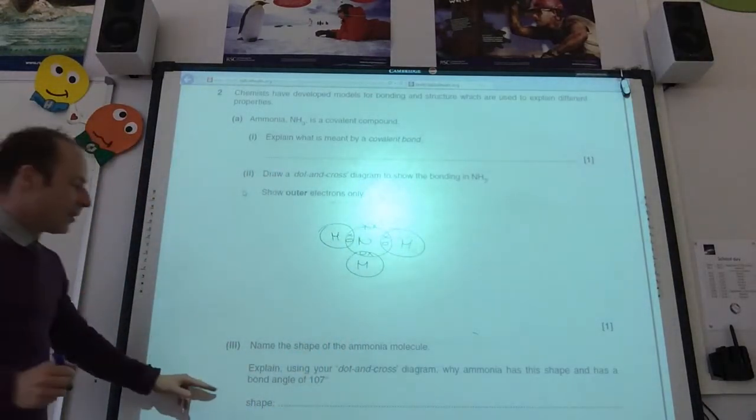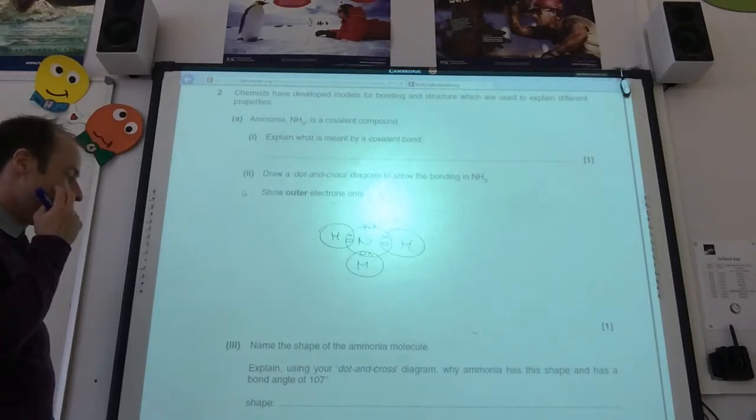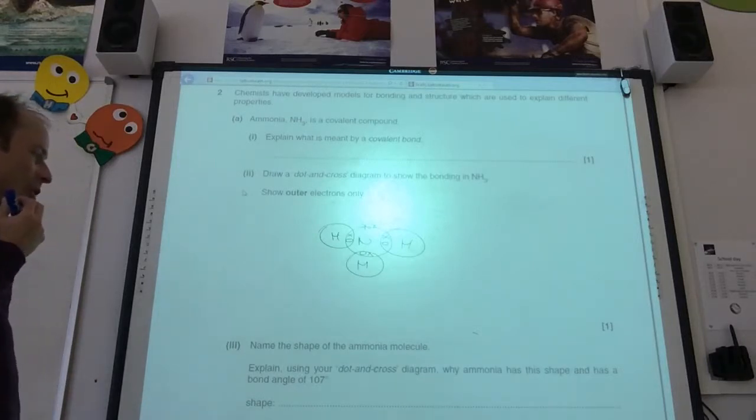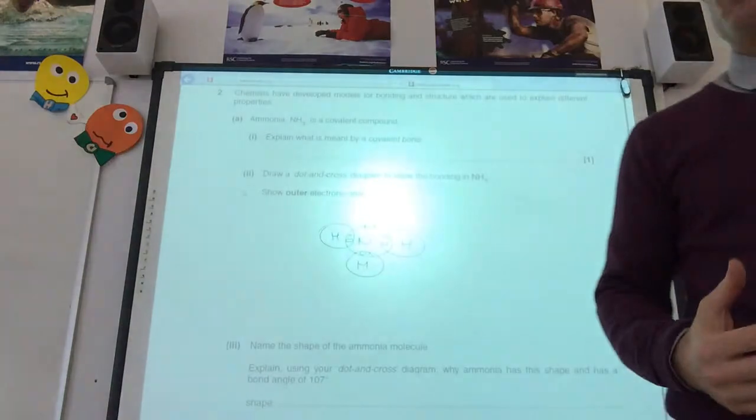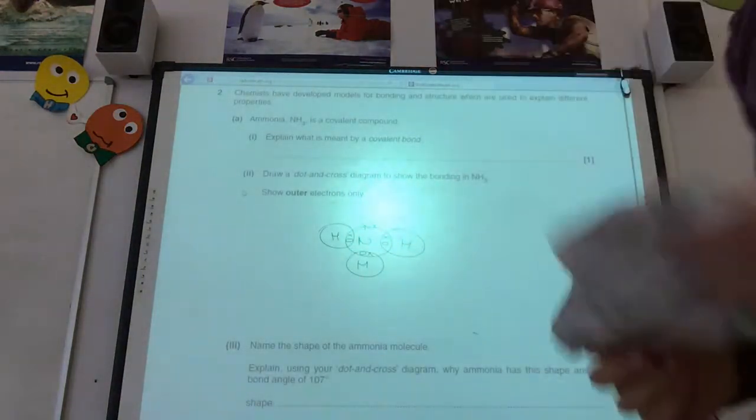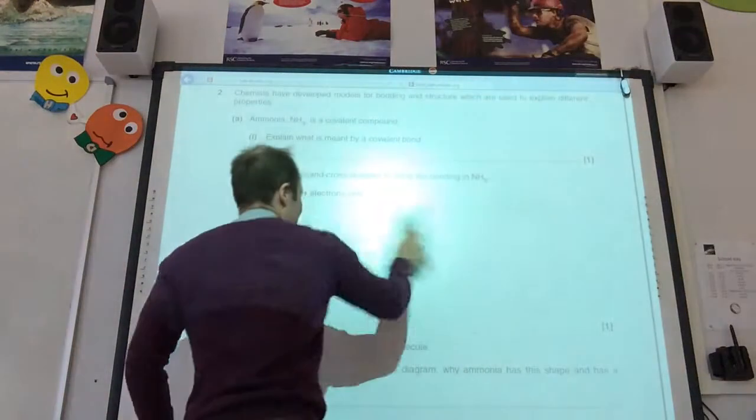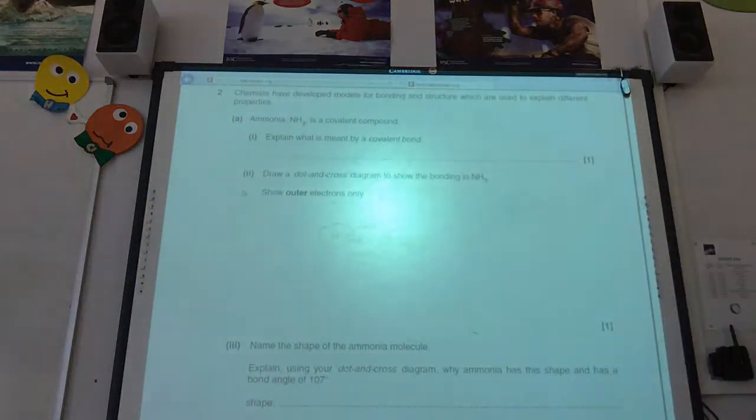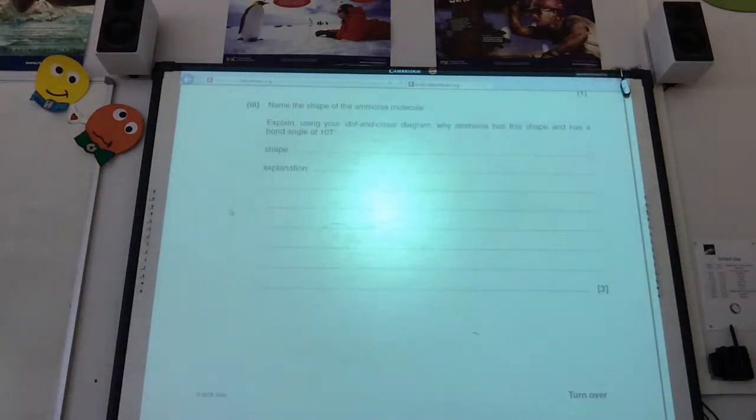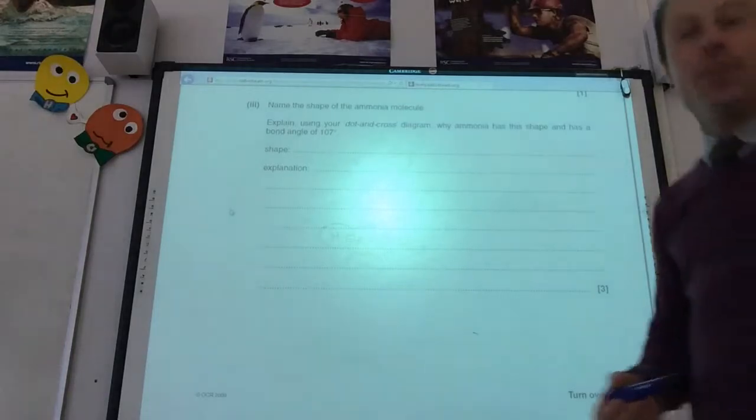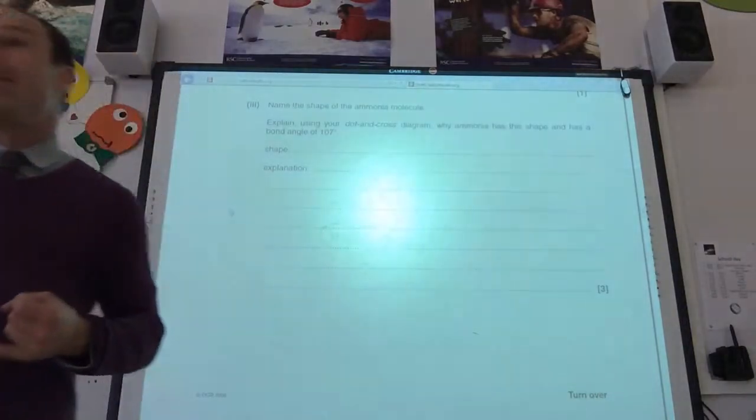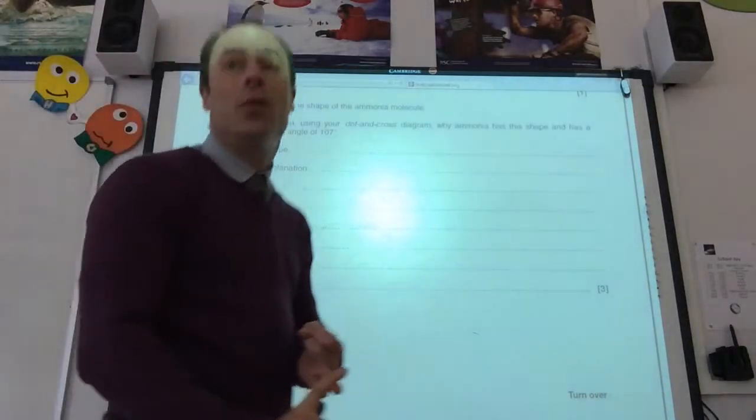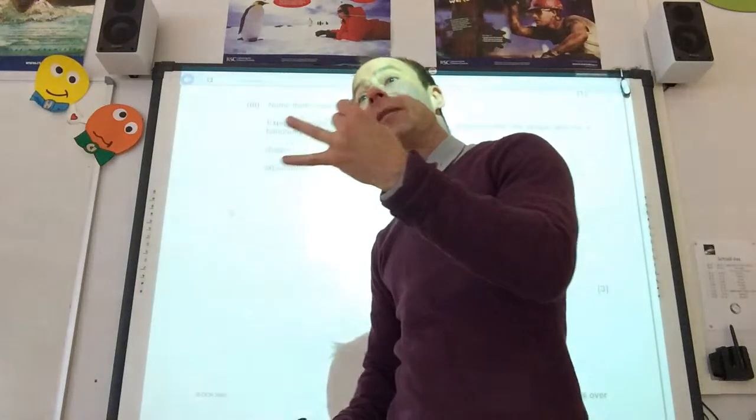Name the shape of the ammonia molecule. Explain using dot-cross and why ammonia has this shape, and a bond angle of 107 degrees. The shape is, of course, pyramidal. Let's get rid of that. So we've got a shape. What's going to be my bond angle? Oh, the bond angle they tell me is going to be 107 degrees. For the explanation, explanation you always include electron pairs repel. Lone pairs repel more than bonded pairs. Always put those two statements in.